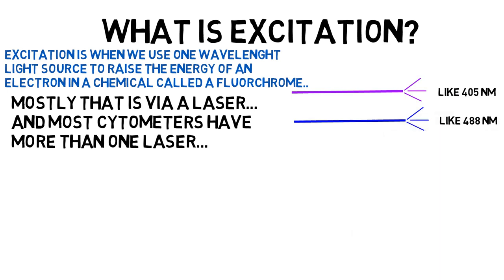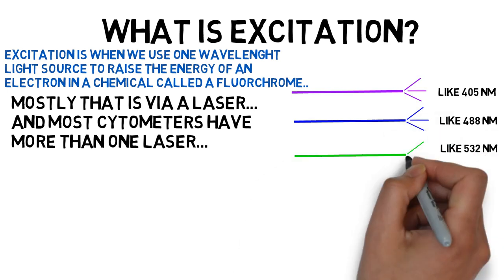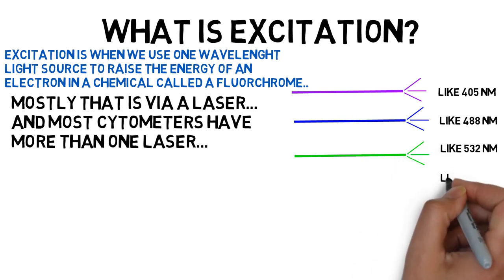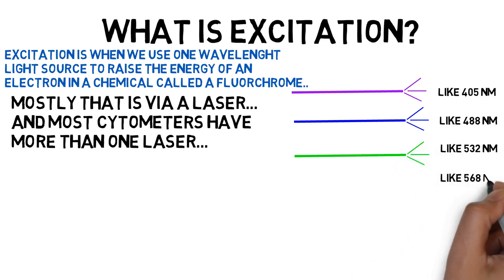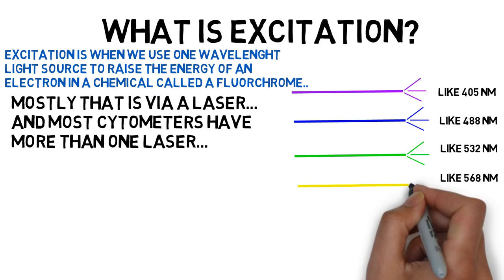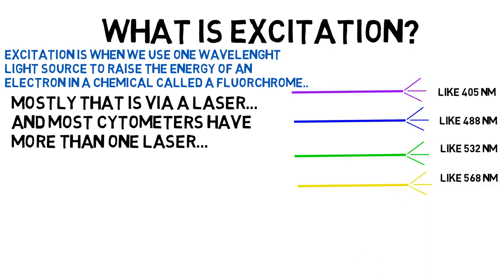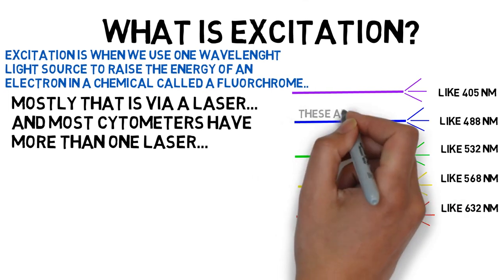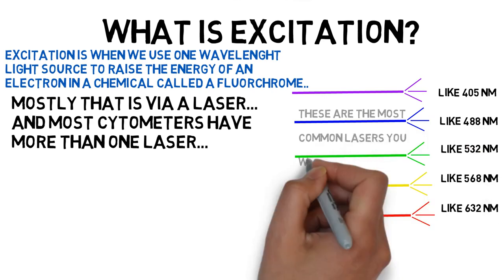Then probably the most common, the 488 nanometer line from an argon laser. The 532 nanometer green line, the 568 nanometer yellow line, often coming from krypton lasers. And finally, a red line, often about 632 nanometers, but can be 660 nanometers or even higher. These are the most common lasers you'll find in flow cytometers today.